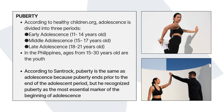According to healthychildren.org, adolescence is divided into three periods: early adolescence from 11 to 14 years old, middle adolescence from 15 to 17 years old, and late adolescence from 18 to 21 years old. In the Philippines, ages from 15 to 30 years old are considered youth. According to Sandrock, puberty is recognized as the most essential marker of the beginning of adolescence, though puberty ends prior to the end of the adolescent period.